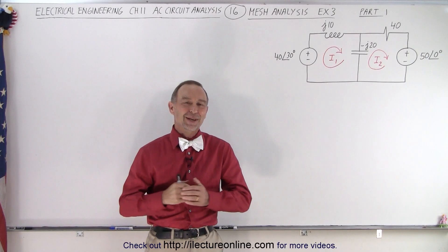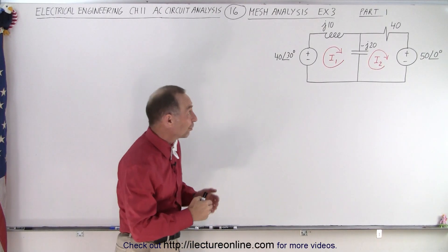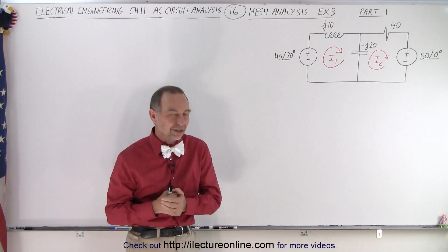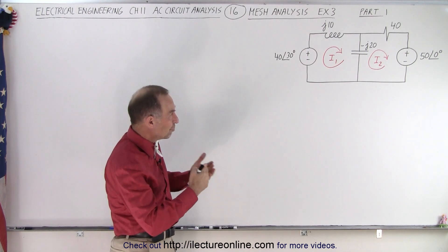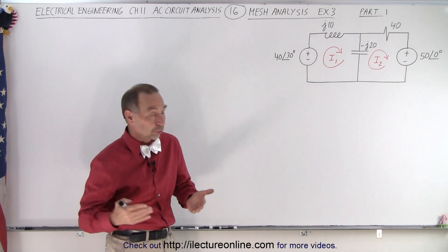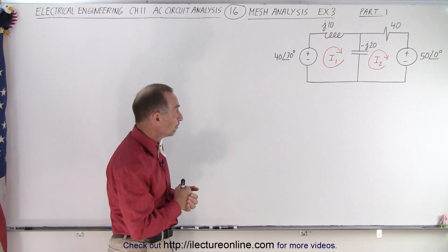Welcome to iLecture Online. So here is our third example of how to solve a circuit using the mesh analysis method. We just have two meshes and we're looking for the two currents I1 and I2.